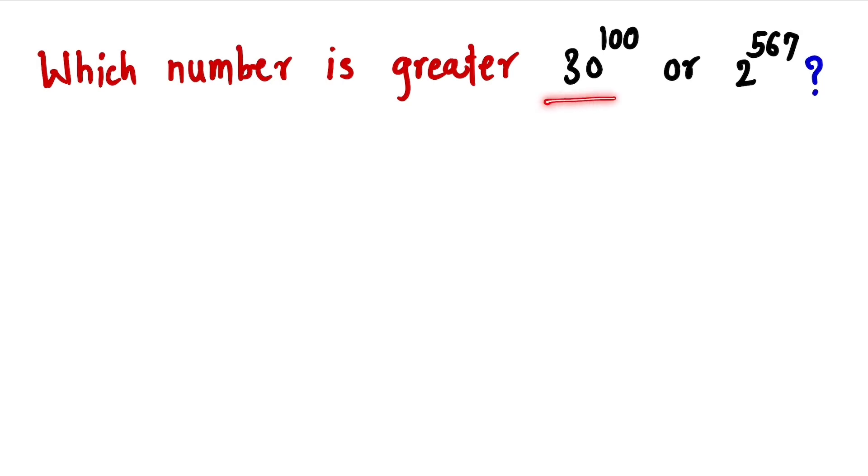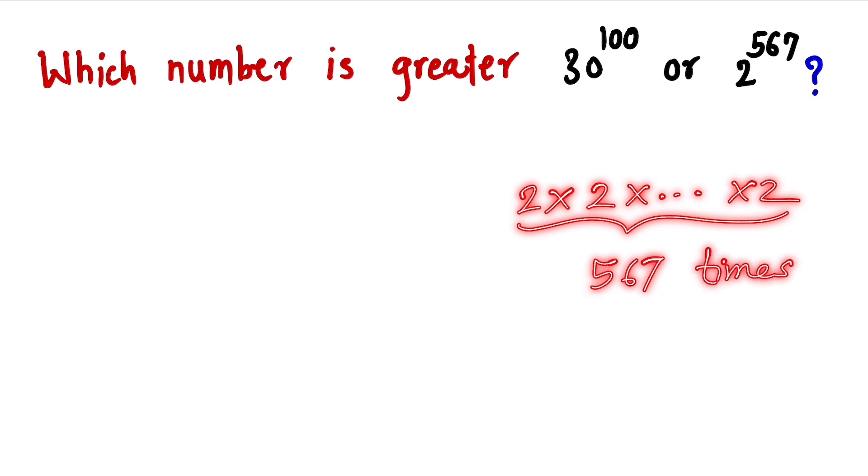If you look at these two numbers, we cannot even write these numbers on this board. Suppose 2 raise to 567, that means we have to multiply this 2 with itself 567 times. It is a very big number.